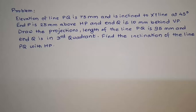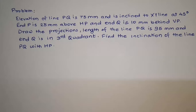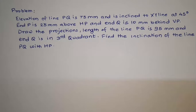Students, this is the last problem of the projections of line. The problem states: elevation of line PQ is 75mm, it is inclined to the XY line at 45 degrees — so alpha is given. End P is 25mm above HP and end Q is 10mm behind VP. Draw the projections; length of line PQ is 95mm.